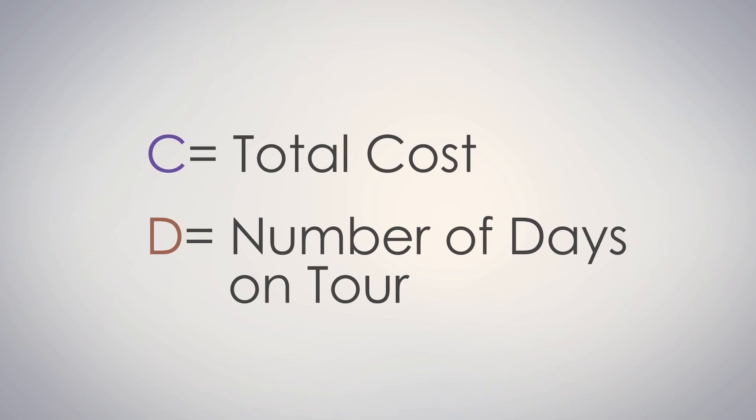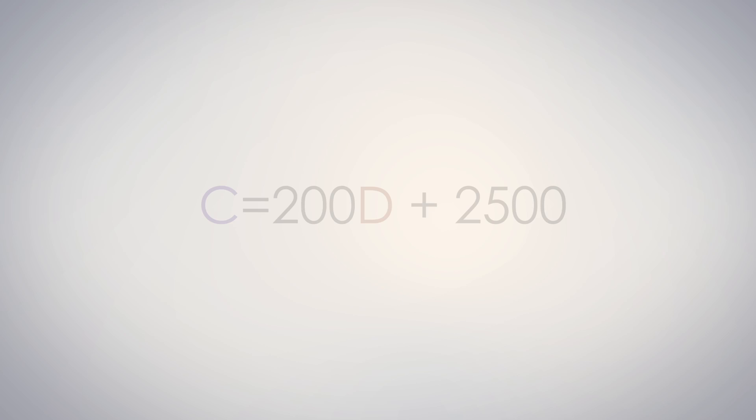Let's build a linear function to see what the given information is able to tell us. First, we'll assign some variables for this function. Let's use C for our total cost, and D to represent the number of days on tour.